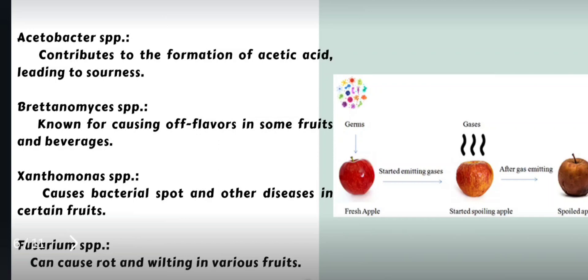Brettanomyces species are majorly known for causing off-flavor in fruits and beverages. Xanthomonas species causes bacterial spot and other diseases in certain fruits. Fusarium species can cause root rot and wilting in various fruits.